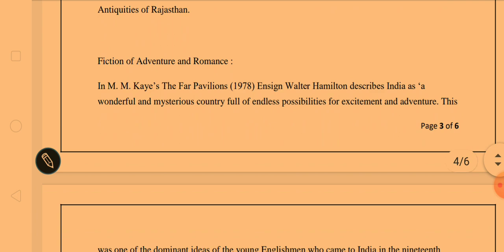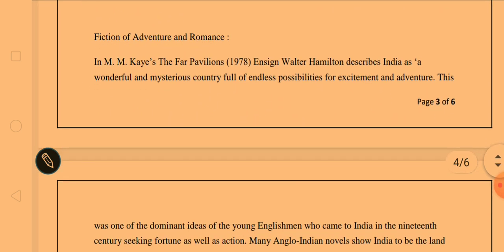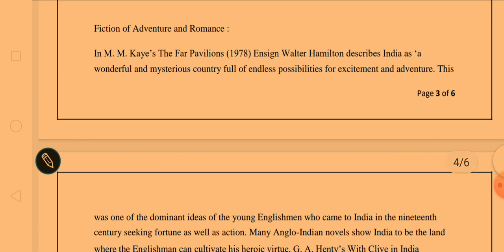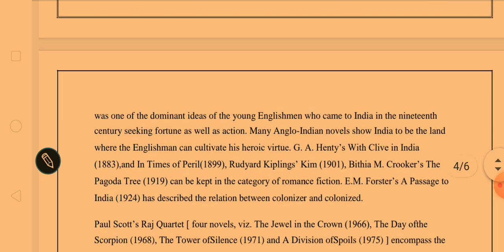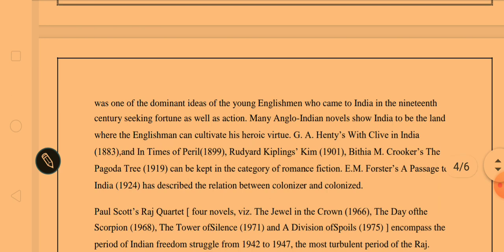Moving to the fiction of Anglo-Indian writers: MMK's Far Pavilions describes India as a wonderful and mysterious country full of endless possibilities for excitement and adventure. This was one of the dominant ideas of the young Englishman who came to India in the 19th century seeking fortune as well as action. Many Anglo-Indian novels show India as a land where the Englishman can cultivate his heroic virtue. G.A. Henty's With Clive in India in Times of Peril, 1899, is one such example.